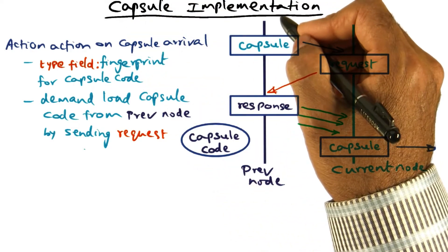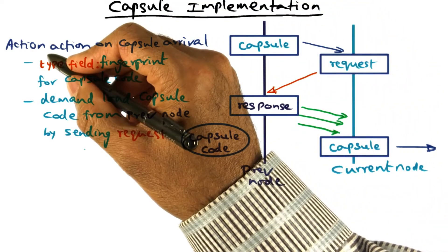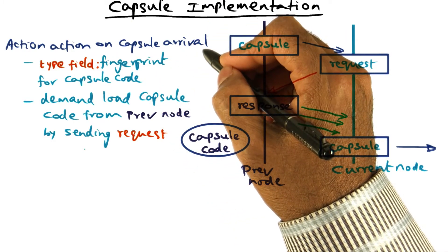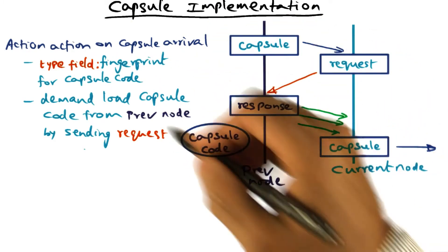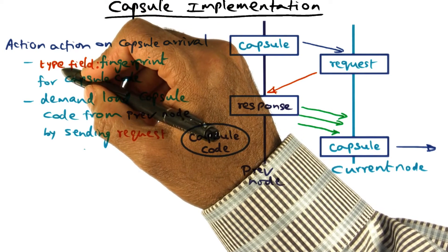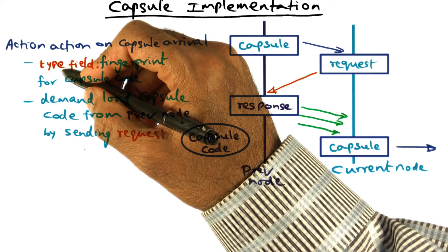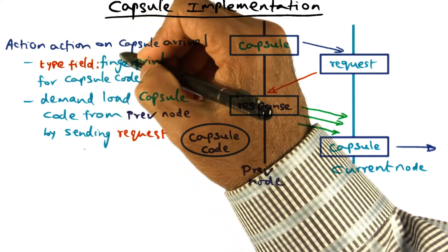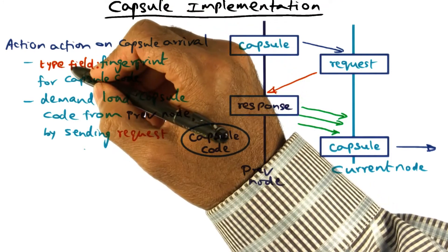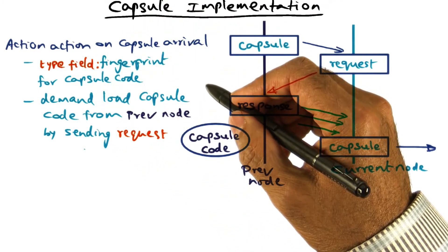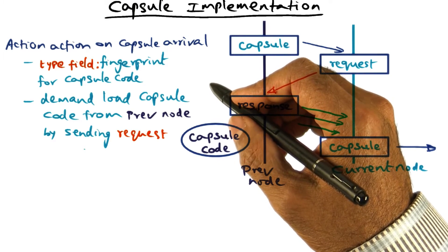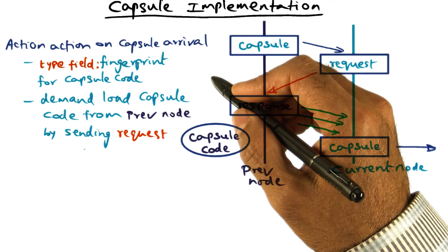Now let's talk about implementation of the capsule, and in particular, what are the actions taken on capsule arrival at a particular node? Now I mentioned that the capsule does not contain code, but it is passed by reference. Or in other words, what the capsule contains is a type identifier, which is really a fingerprint for the capsule code. And the way this type is generated, it's basically a cryptographic fingerprint of the original capsule code.